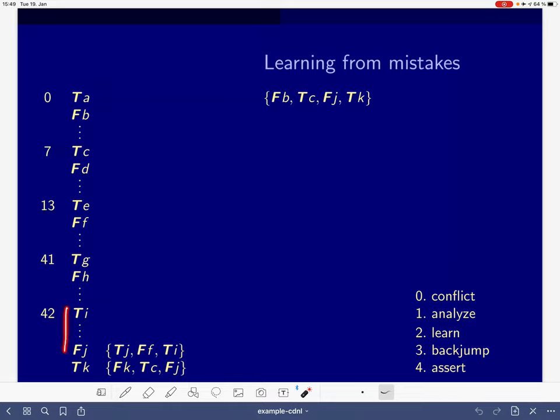But here, on level 42, we detect a conflict. Detecting a conflict means that a no-good gets violated, and this means all literals of the no-good can be found in the current assignment. The no-good that I just fabricated is this guy. As we see, F of B is here, T of C is here, F of J is here, and T of K is here.